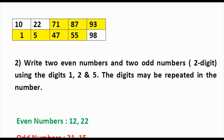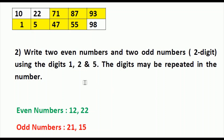Next, we have to write odd numbers. The given odd numbers are 1 and 5, so the number should end with 1 or 5. Here I am writing 21. The thing you should keep in mind is that the number should end with 1 or 5, and in the next place you can write any of the given numbers. So the numbers I wrote are 21 and 15. 15 ends with 5 and 5 is an odd number, so 15 is an odd number.